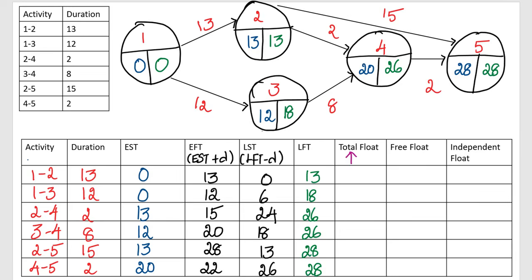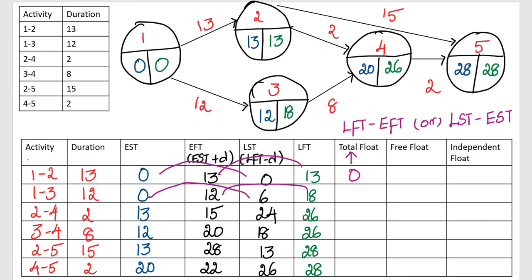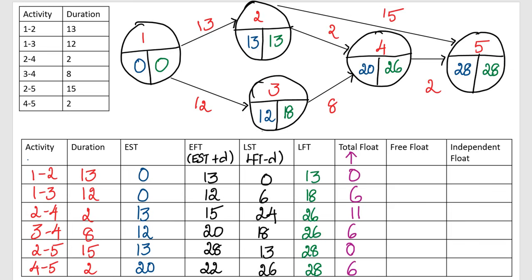Now let's calculate total float. You can use either LFT − EFT or LST − EST — both give the same answer. For activity 1-2: 13−13=0, or 0−0=0. For activity 1-3: 18−12=6, or 6−0=6. For activity 2-4: 26−15=11, or 24−13=11. For activity 3-4: 26−20=6, or 18−12=6. For activity 2-5: 28−28=0, or 13−13=0. For activity 4-5: 28−22=6, or 26−20=6.